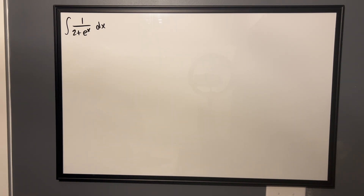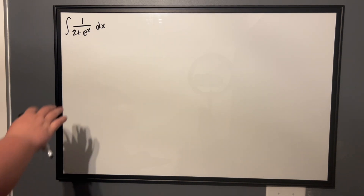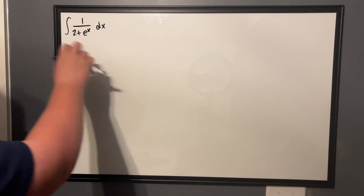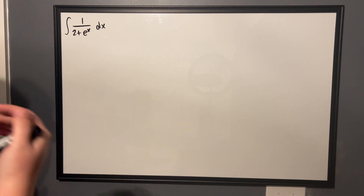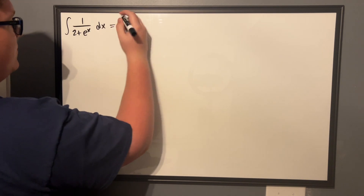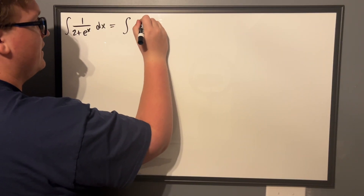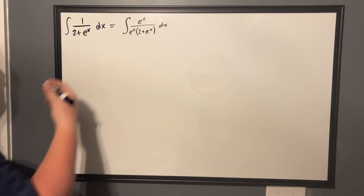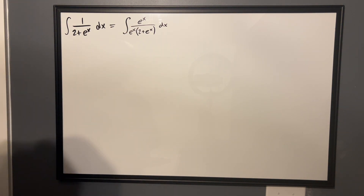Here's the second integral. This one is definitely trickier, mainly because you have to manipulate the integrand before you can do anything with it. We can't really do any substitution right now — if we choose u as the denominator, its derivative is just eˣ again, and we don't have an eˣ in the numerator to cancel. So u-sub doesn't help us in this form. But we want an eˣ in the numerator. What we can do is multiply numerator and denominator by eˣ. As long as we do it in both, we don't change anything and it's fine.